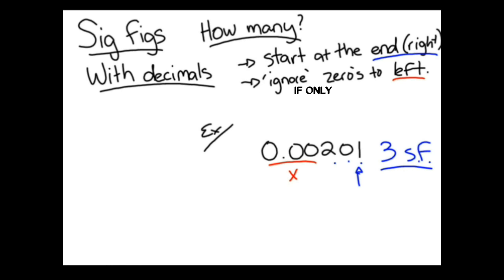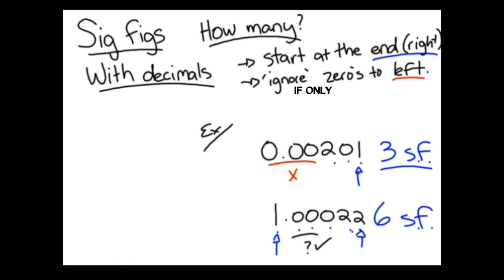Looking at another example, if we wanted to know how many sig figs 1.00022 has, we start at the end, and we notice a few zeros here. Are they significant? Yes, because there is a 1 to the left of them. Therefore, they are all sig figs, and this number has 6 significant figures.